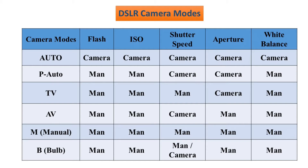For example, in program mode you can operate the shutter speed for blur shots, but you don't have to set it manually. You can use lighting adjustment and aperture speed. In manual mode, you control the shutter and aperture yourself.